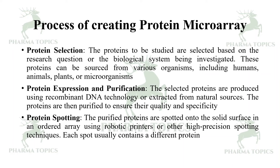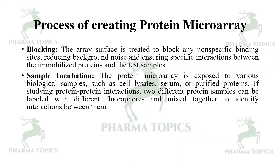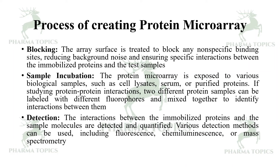The purified proteins are then spotted onto a solid surface in an ordered array using robotic printers or other high-precision spotting techniques, with each spot containing a different protein. The array surface is then blocked to reduce non-specific binding and background noise. During sample incubation, the protein microarray is exposed to biological samples such as cell lysates or serum. For protein–protein interaction studies, two protein samples labeled with different fluorophores are mixed to identify interactions. Detection methods include fluorescence, chemiluminescence, or mass spectrometry.